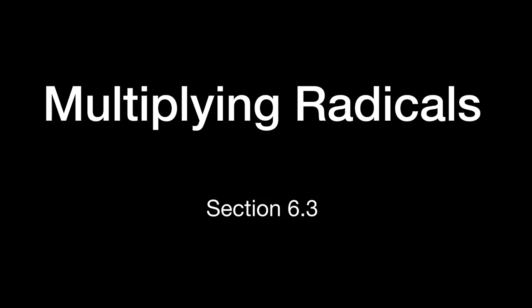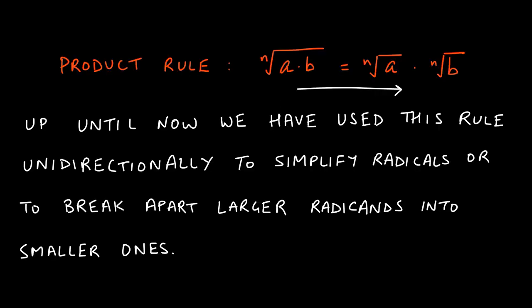Welcome to section 6.3. In this section we'll talk about how to multiply radicals. As a review from sections 6.1 and 6.2, we talked about the product rule and used it going in one direction — taking a big radicand like 98, splitting it into 49 times 2, then separating the radical so we get the square root of 49 times the square root of 2, giving us 7√2.